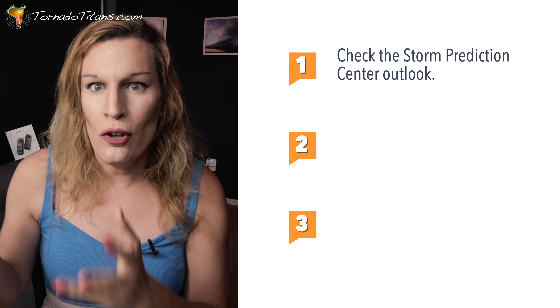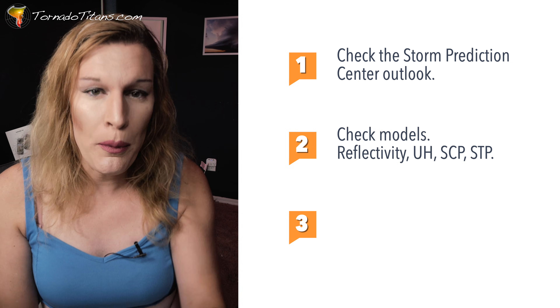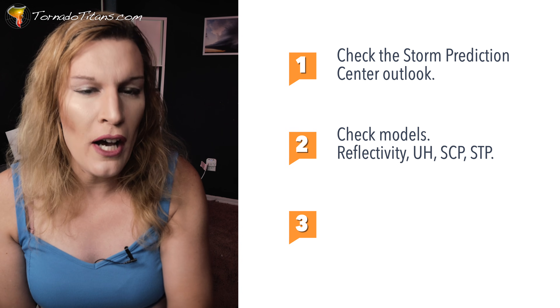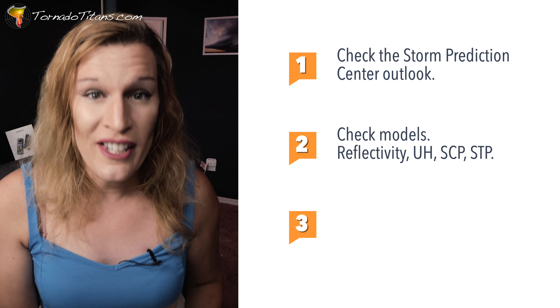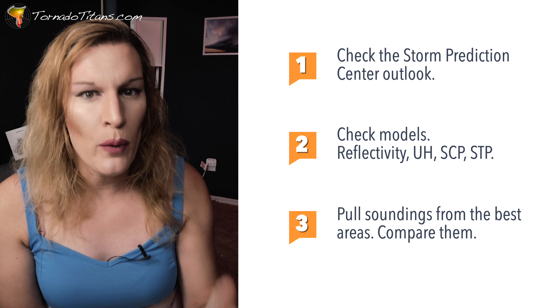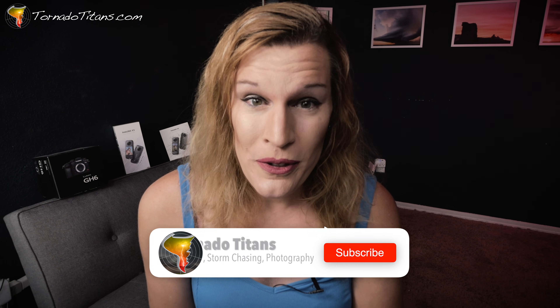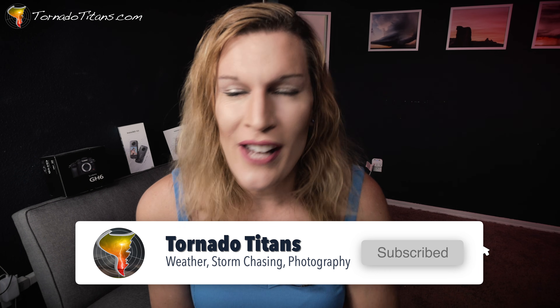Let's put it all together. First, check the Storm Prediction Center to see where the outlook shows a risk of severe weather. Then go to the models and identify a couple of areas within that zone that look more favorable than others. Lastly, use soundings to differentiate between those areas using the scales we talked about — whichever has the best balance of all the parameters is where most people will be targeting. That's severe weather forecasting in less than 10 minutes. This is complicated, but you now have a running start. Weather's for everybody — that includes you.